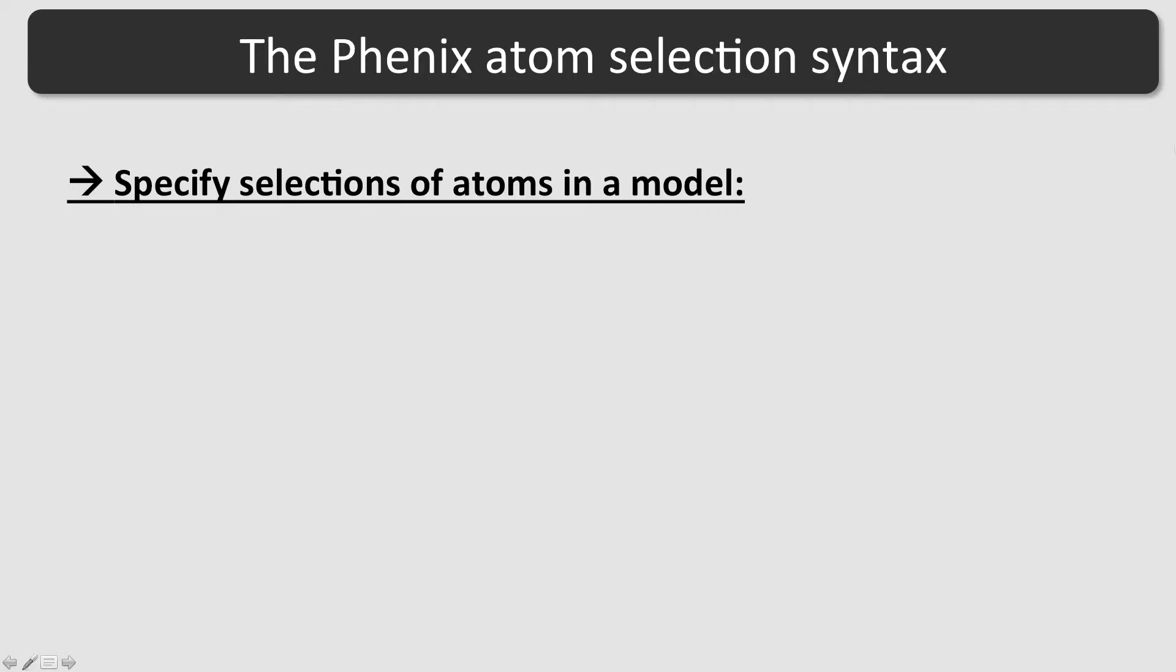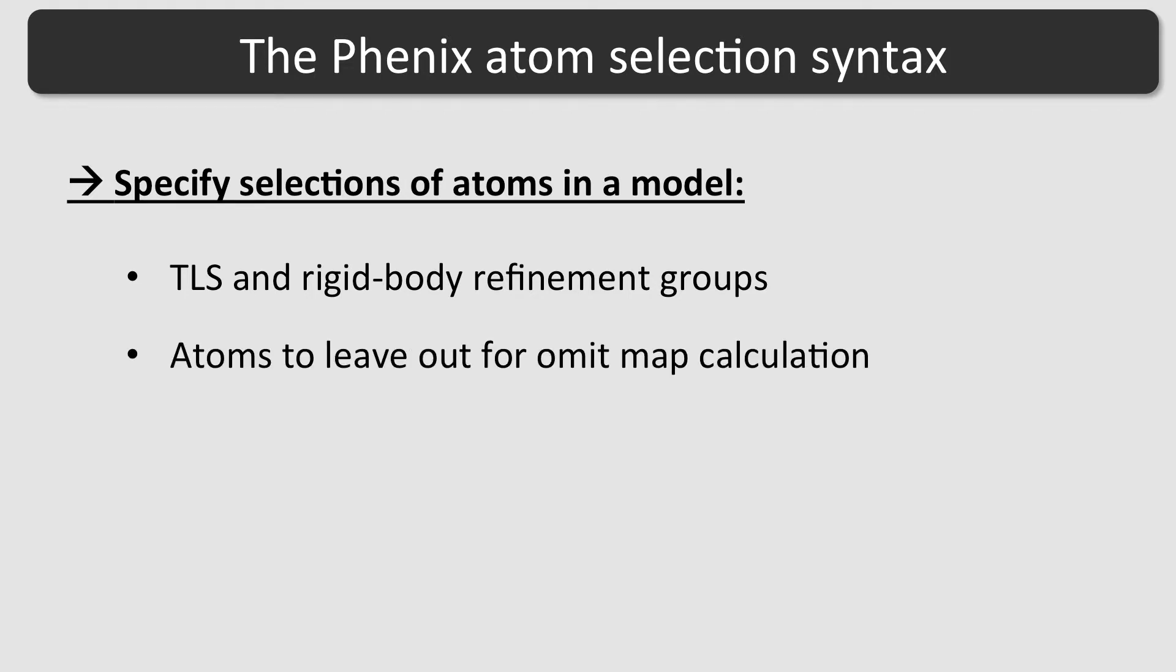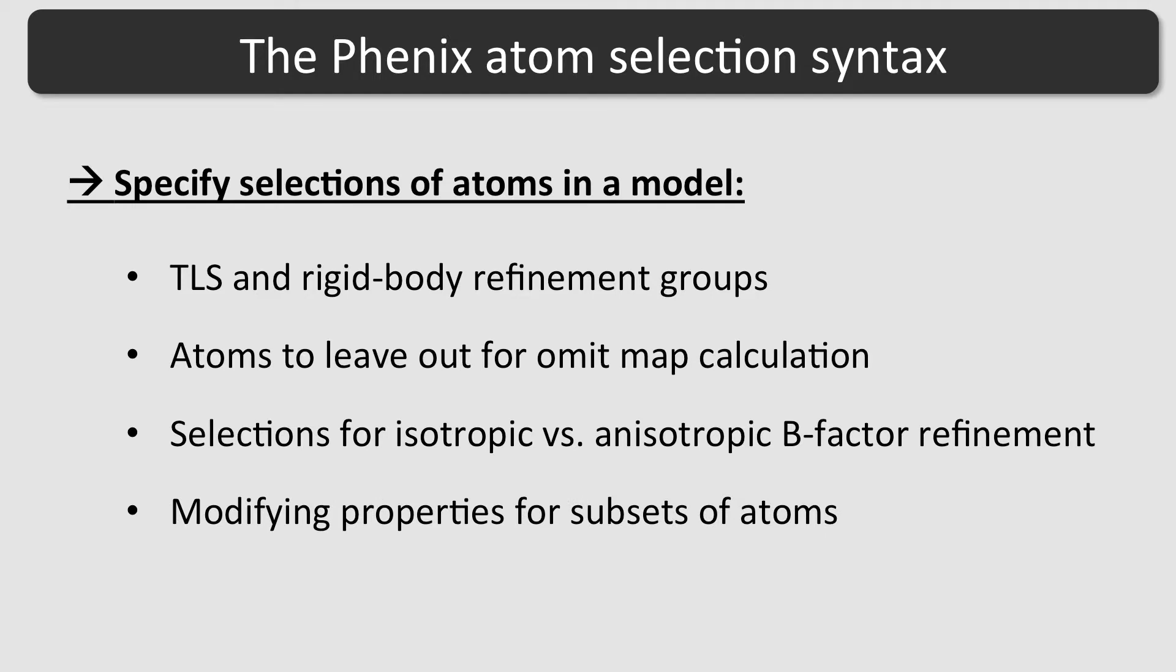Many of the programs in Phoenix allow specifying selections of atoms in a model. Common examples include TLS and rigid body refinement groups, atoms to leave out for a midmap calculation, selections for isotropic versus anisotropic b-factor refinement, and modifying properties for subsets of atoms.